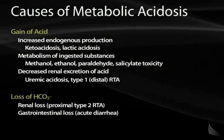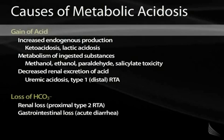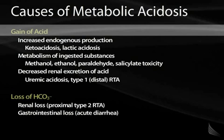A metabolic acidosis can result from either a gain of acid or a loss of bicarbonate. A gain of acid can occur from increased endogenous acid production, ingestion of substances whose metabolism leads to increased acid generation, or decreased renal excretion of acid. In normal physiology, both lactate and ketones are present in low concentrations, but during physiologic extremes is when lactic acid or ketoacid concentration becomes clinically relevant.